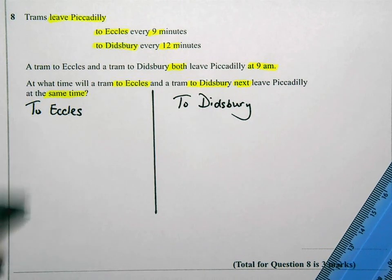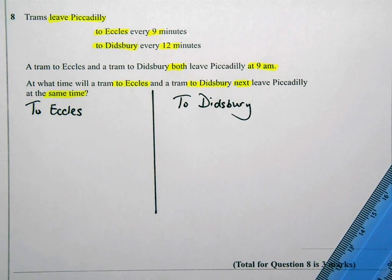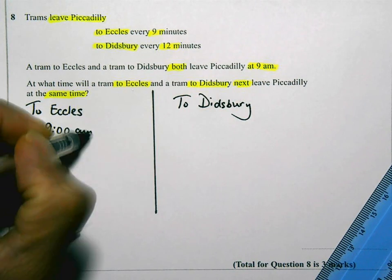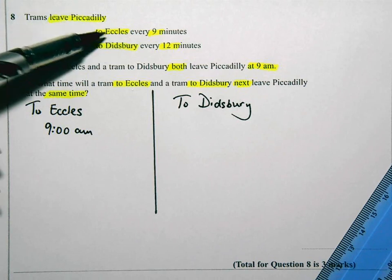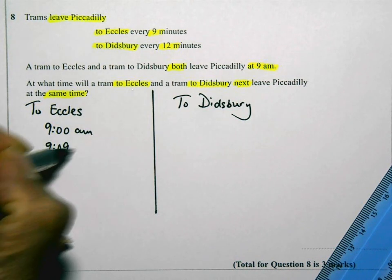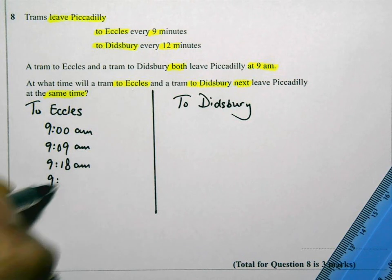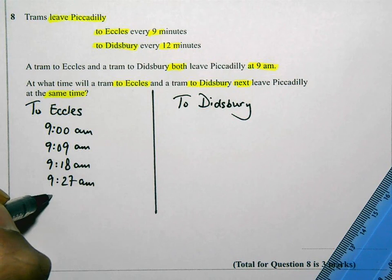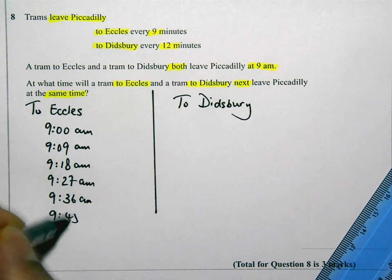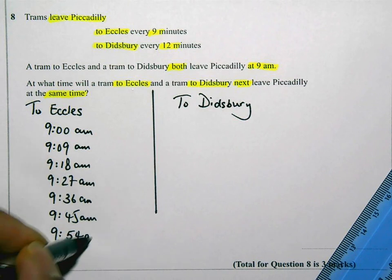I'm going to write down the times at which trams are going to leave Piccadilly to go to Eccles and to go to Didsbury. We know a tram left at 9 a.m. Trams leave to go to Eccles every nine minutes, so the next one is 9.09 a.m., then 9.18, 9.27, 9.36, 9.45, and 9.54 a.m. I'll come back and do some more if I need.